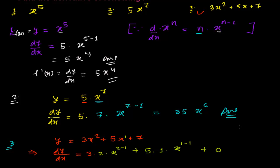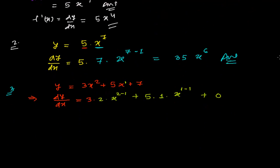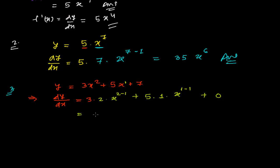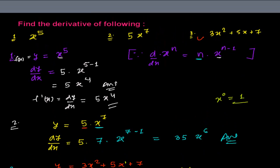The derivative of the constant 7 is 0. So we get 3 times 2, which is 6, times x to the power 2 minus 1 — that's 6x. Then 5 times x to the power 1 minus 1, which is x to the power 0, equals 1. So the final answer is 6x plus 5. That's our derivative.